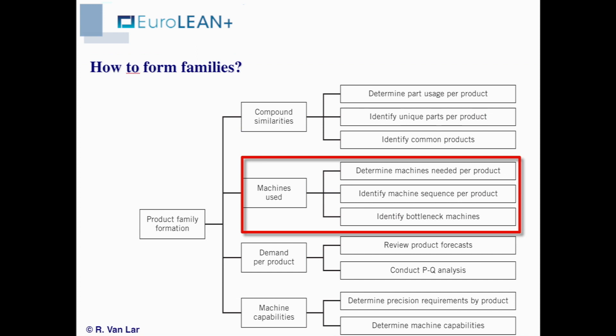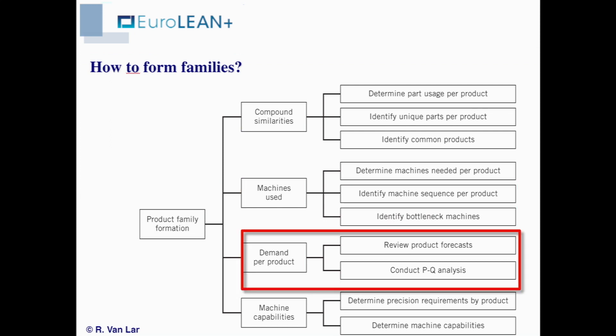Since the capacity of a cell is an important decision, a third common approach is to look at the overall demand of the products and segregate them into the high volume ones or high runners, and the low volume ones or low runners. This is called a PQ analysis — P for product, Q for quantity.